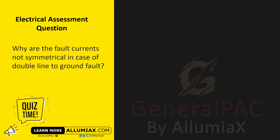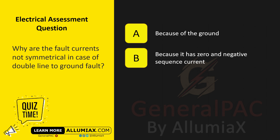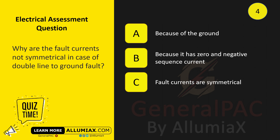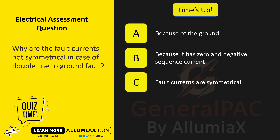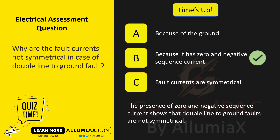Why are the fault currents not symmetrical in case of double line-to-ground fault? A. Because of the ground. B. Because it has zero and negative sequence current. C. Fault currents are symmetrical. The answer is B. The presence of zero and negative sequence current shows that double line-to-ground faults are not symmetrical.